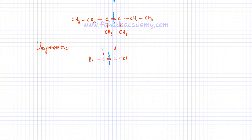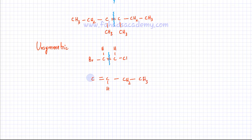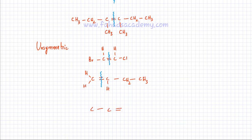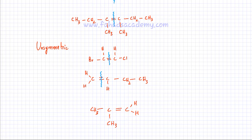Similarly, I can look at but-1-ene. But-2-ene was symmetric, but but-1-ene has a double bond on the first carbon atom — one hydrogen here, two hydrogens on the next carbon, three on the terminal carbon, and two hydrogens on the first carbon. The arrangement of atoms on the left and right hand sides are different, so it's unsymmetric. Other examples include propene and 2-methylpropene, which also have different arrangements of atoms on either side of the double bond.